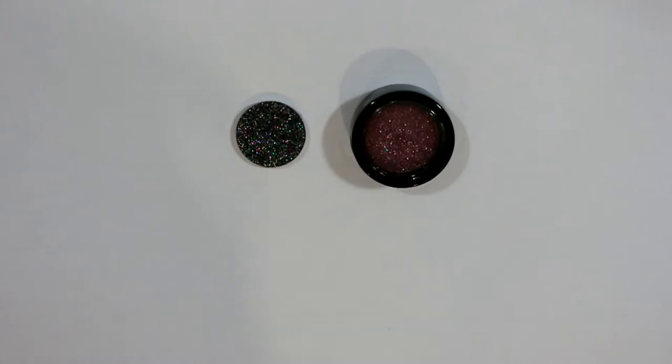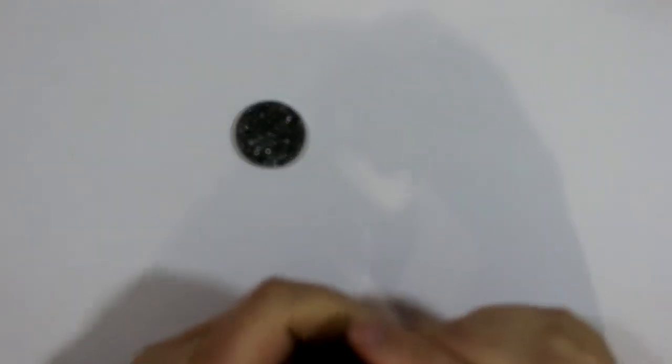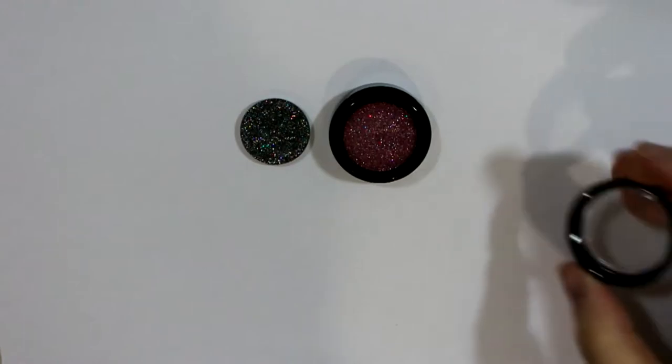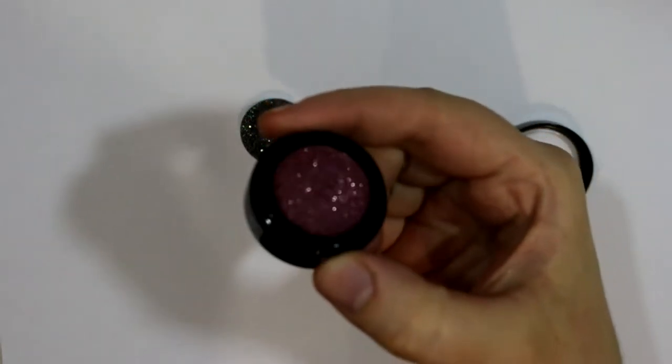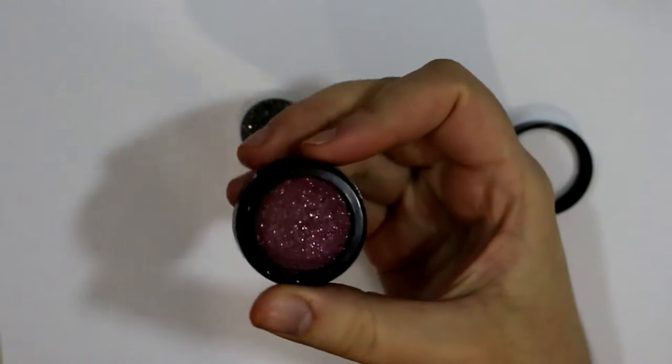So the two glitters that I have normally come in pots like this, but this is just my tester so it's in a pan. I have Posh, which is a black and silver glitter, and then I have Princess, which is a pink glitter. So they're super pretty sparkly. If you like pressed glitters, you will definitely like these.